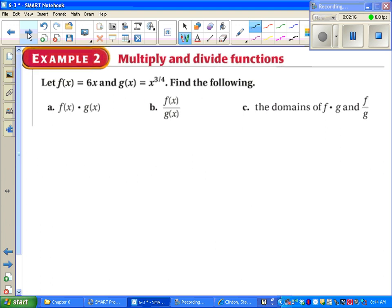So more of the same. Part a says we're going to multiply, so we just do it. 6x times x to the 3 fourths, which gives us, add those exponents, 6x to the 7 over 4. It might be useful to remember that really means the fourth root of x to the 7th. Notice I'm not raising the 6 to the 7th power.